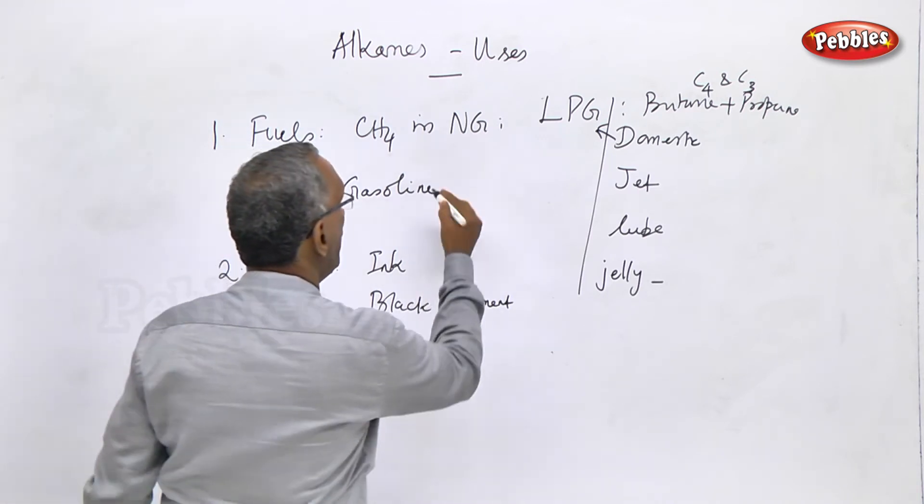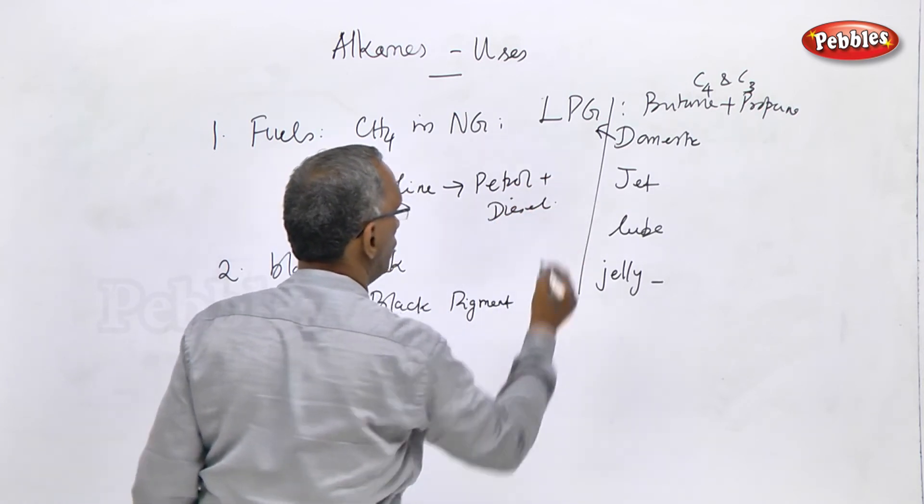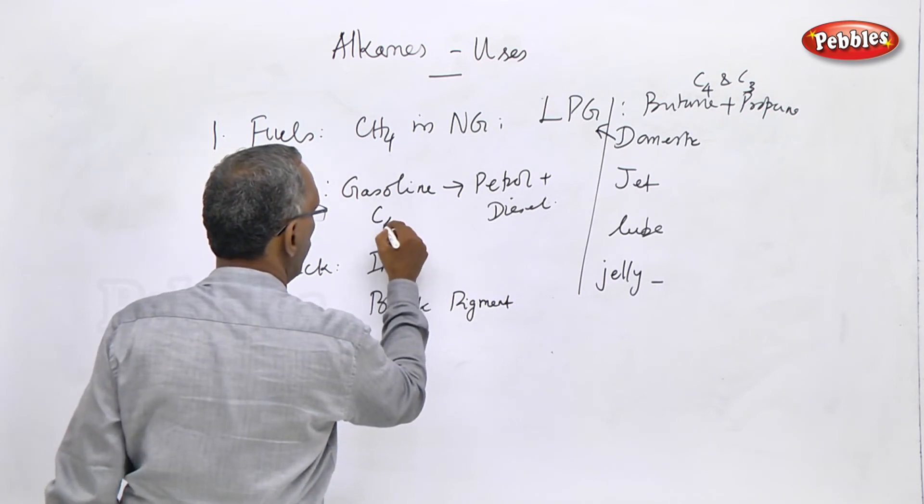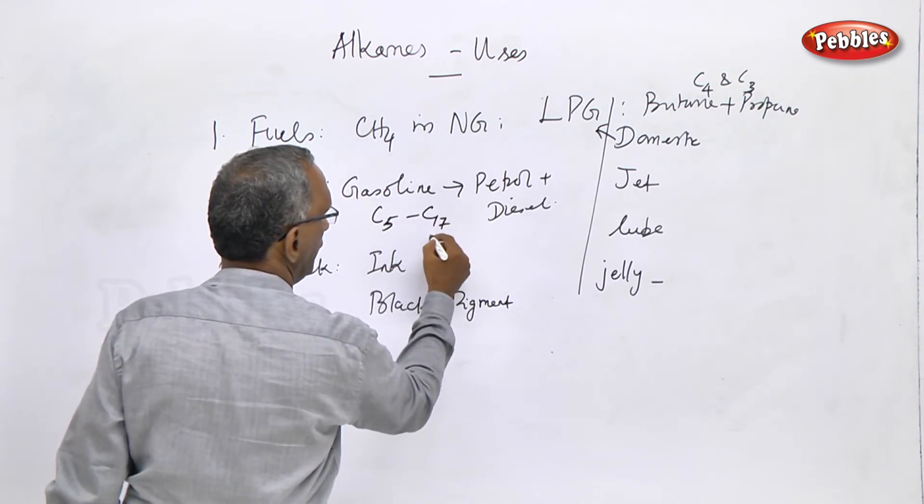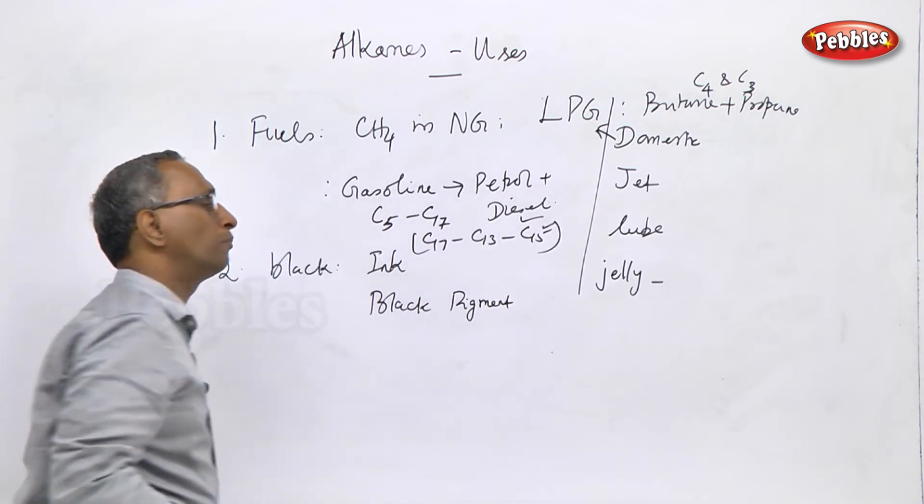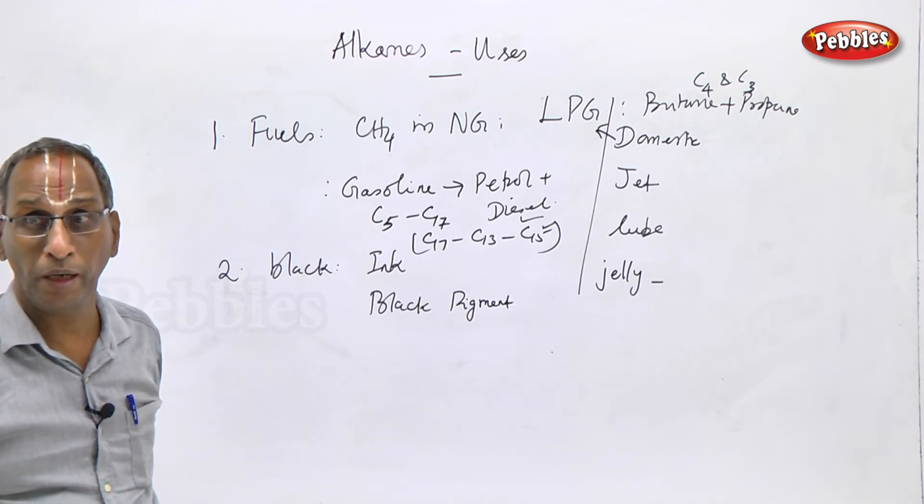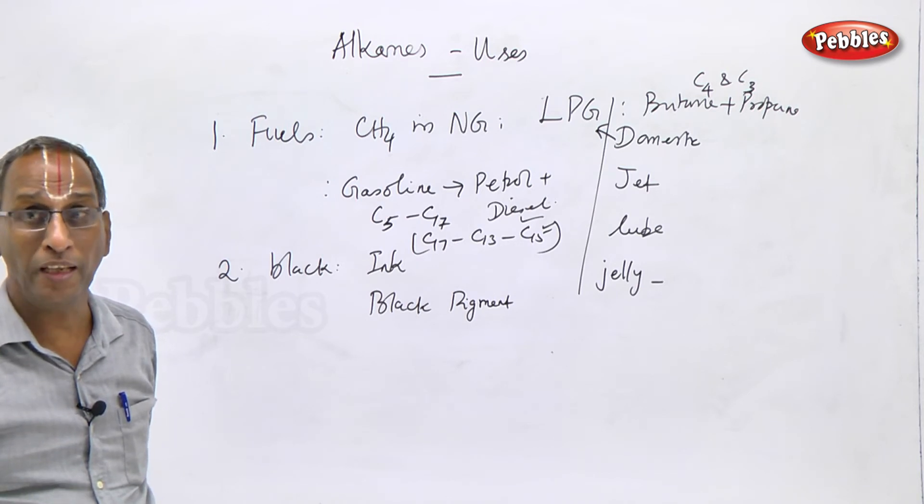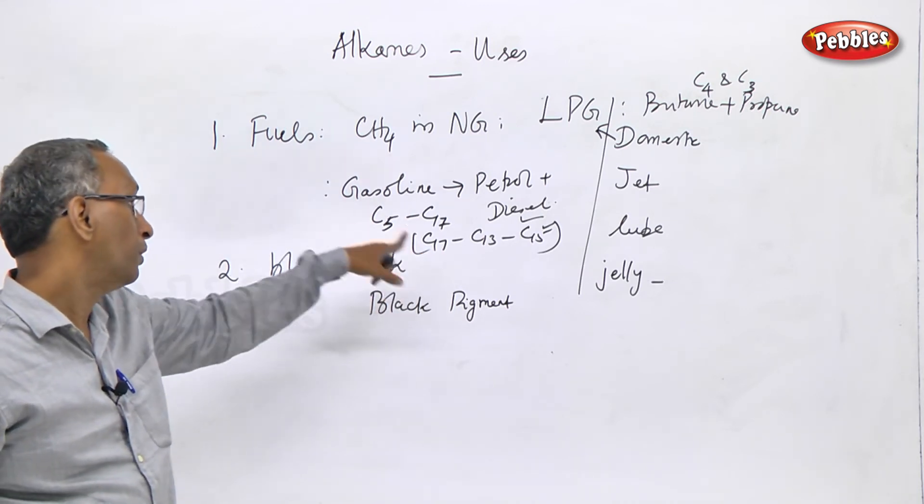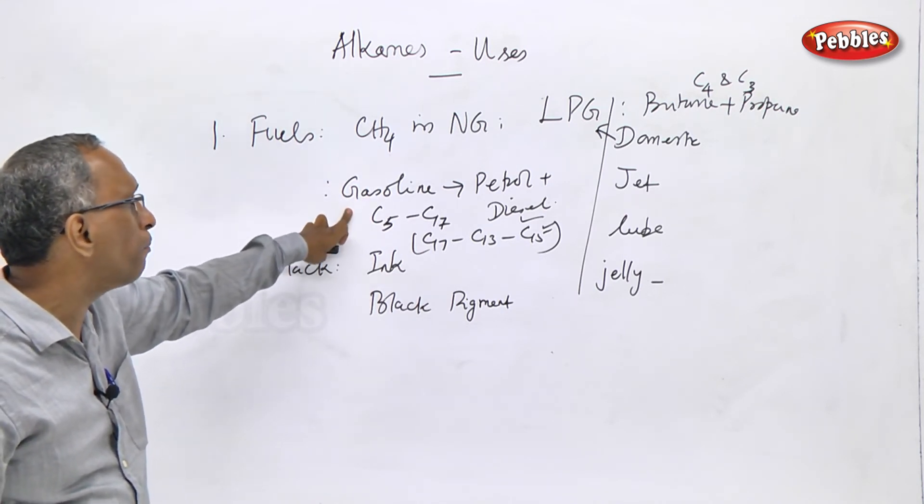Gasoline is a common word for petrol and diesel. Petrol and diesel fuel petrol engines and diesel engines. Petrol contains C5 to C7 straight chain hydrocarbons. Diesel contains branched chain hydrocarbons. Branched chain hydrocarbons are used in diesel engines, straight chain in petrol engines. Gasoline is a common word for petrol and diesel and is an internal combustion engine fuel.